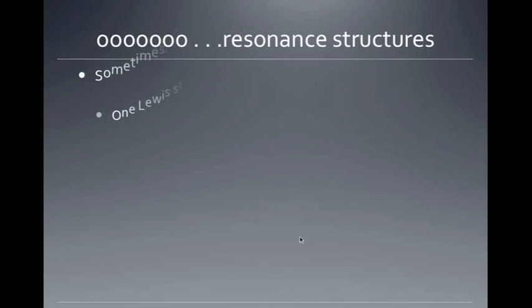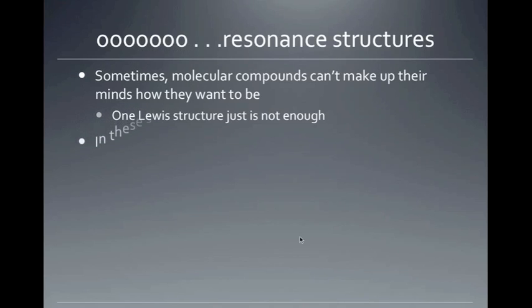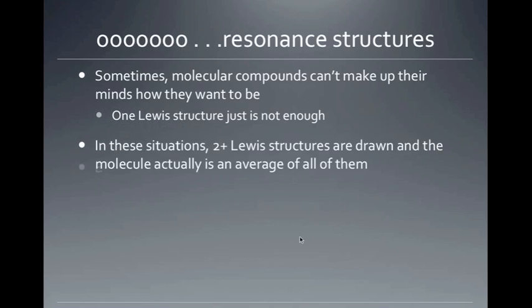Lastly, we have what we call resonance structures, where sometimes molecules can't be described by just one Lewis structure. In these situations, two or more Lewis structures are drawn, and the actual molecule is an average of all of them.